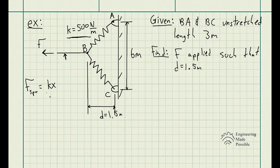When it comes to springs, the force in the spring is equal to the spring constant K times X. In this case, X is the displacement — how much the spring is stretched by. It doesn't count the whole length, only the amount it was actually displaced or stretched. Whether you're compressing the spring or stretching it, it's going to react equal and opposite to the force being applied. So let's go ahead and draw a free body diagram to simplify things a bit more.